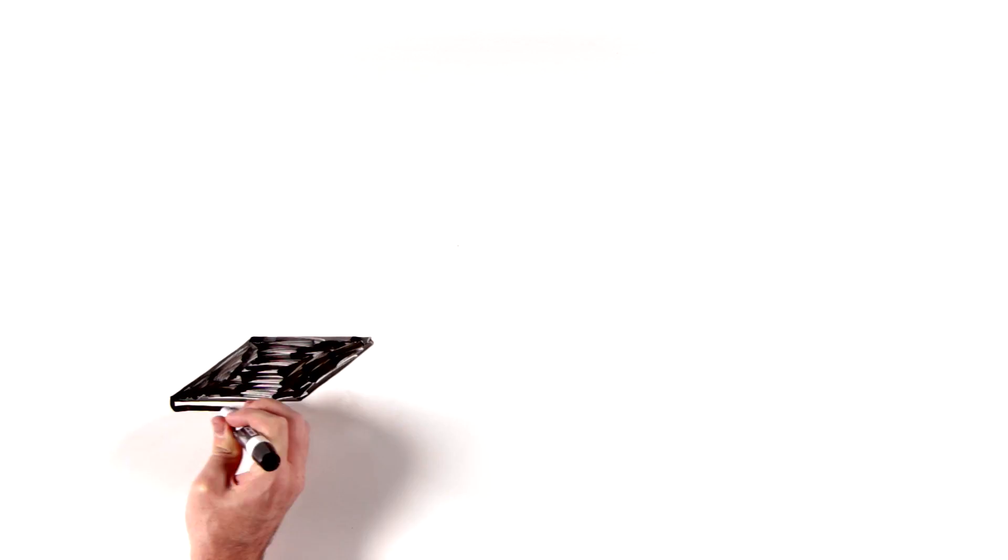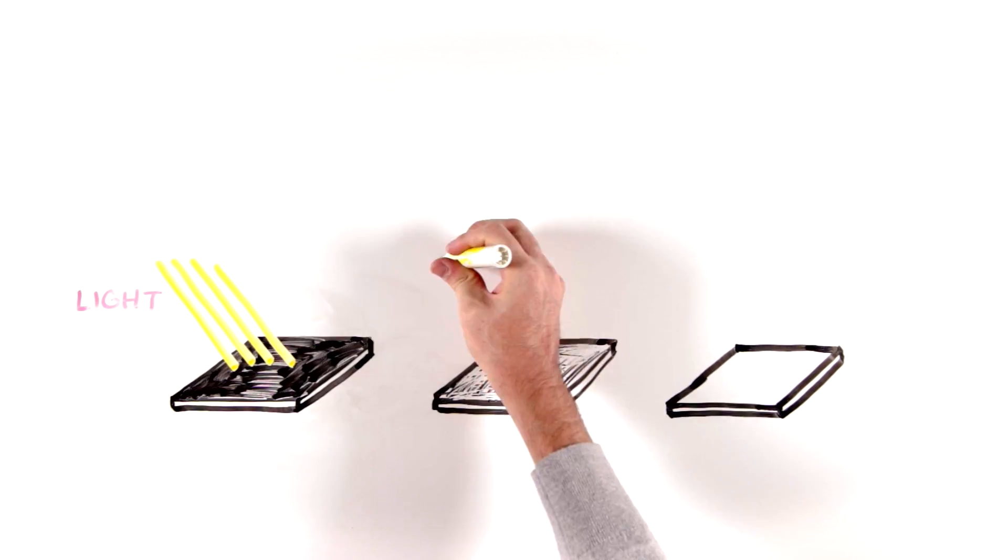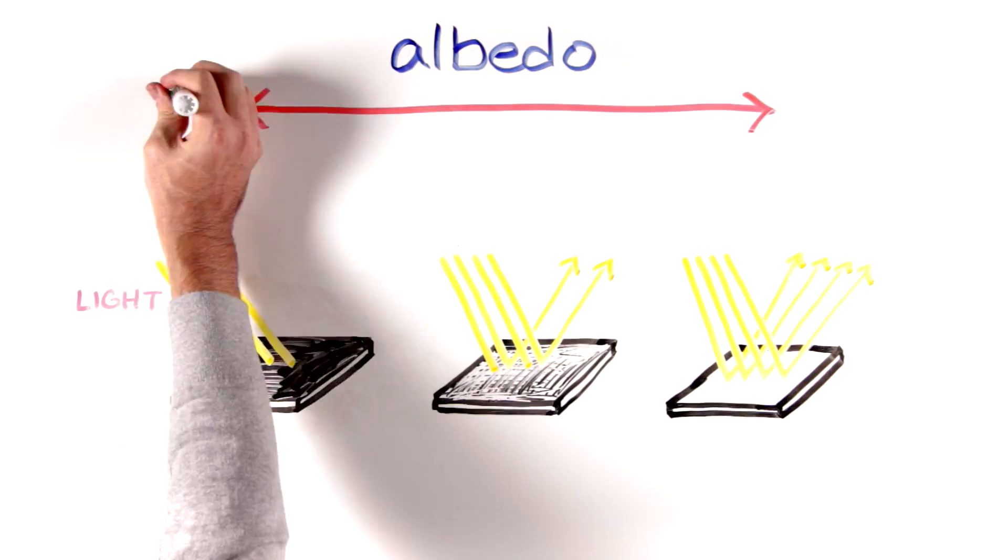Scientists use it to describe the amount of light reflected back from a surface and give it a value between 0 and 1.